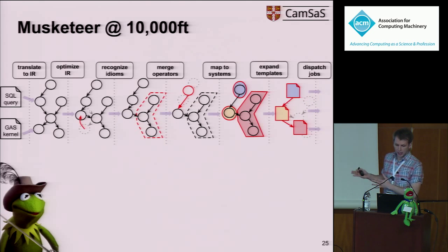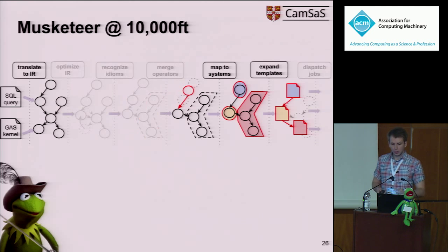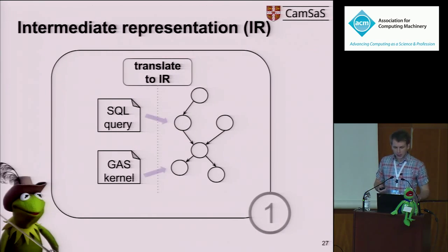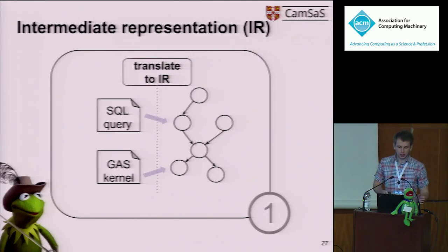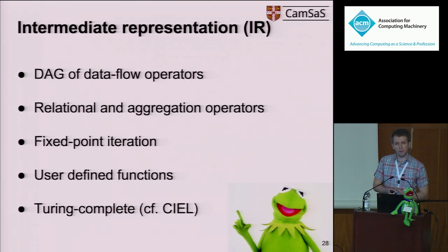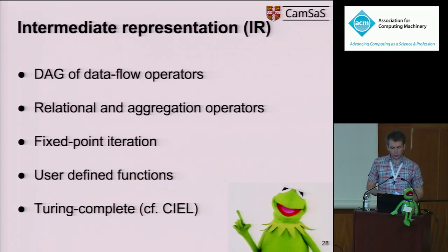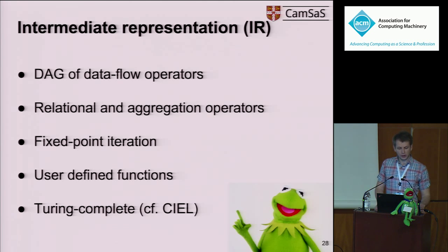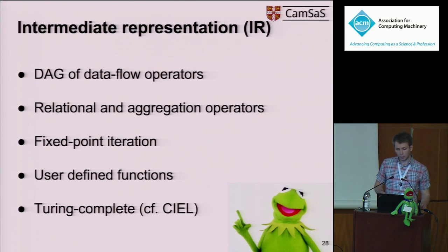These are the six main steps, though I only have time to talk about three of them — please check the paper for more details. The Musketeer intermediate representation consists of a bag of data flow operators, usually based on relational algebra. We also extended it with support for fixed-point iterations and user-defined functions, making the intermediate representation pretty general and Turing complete.